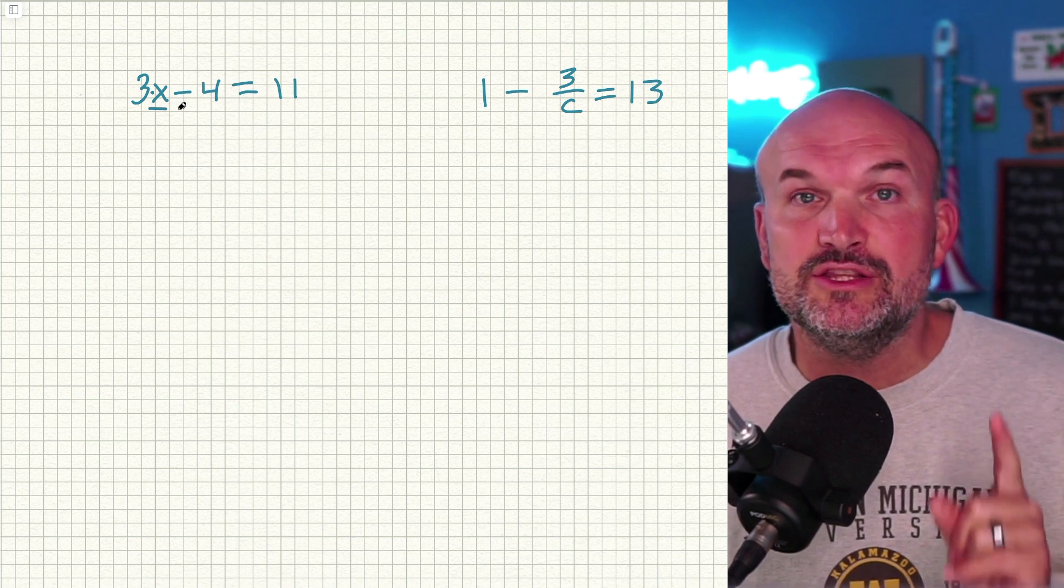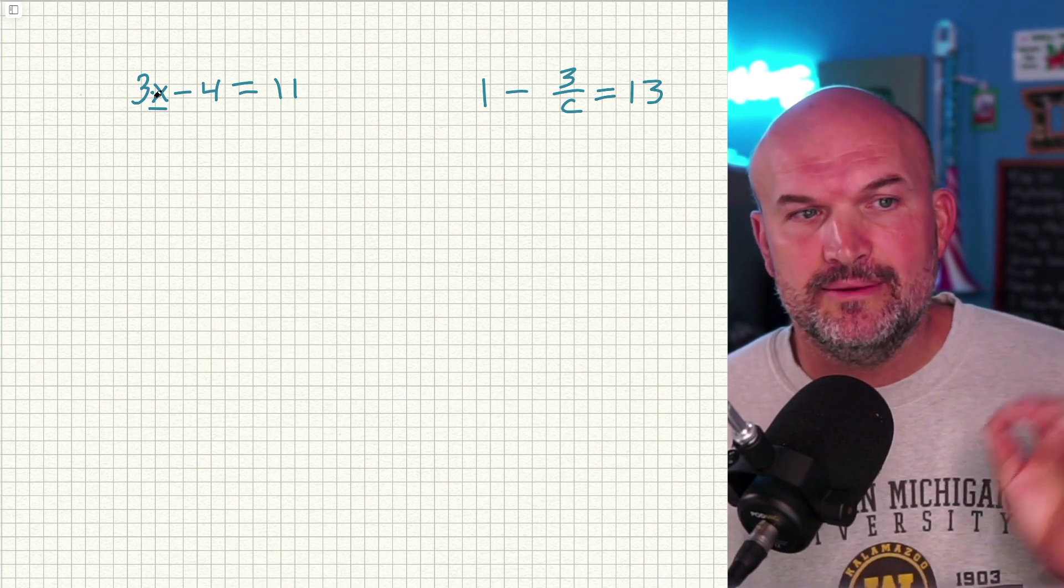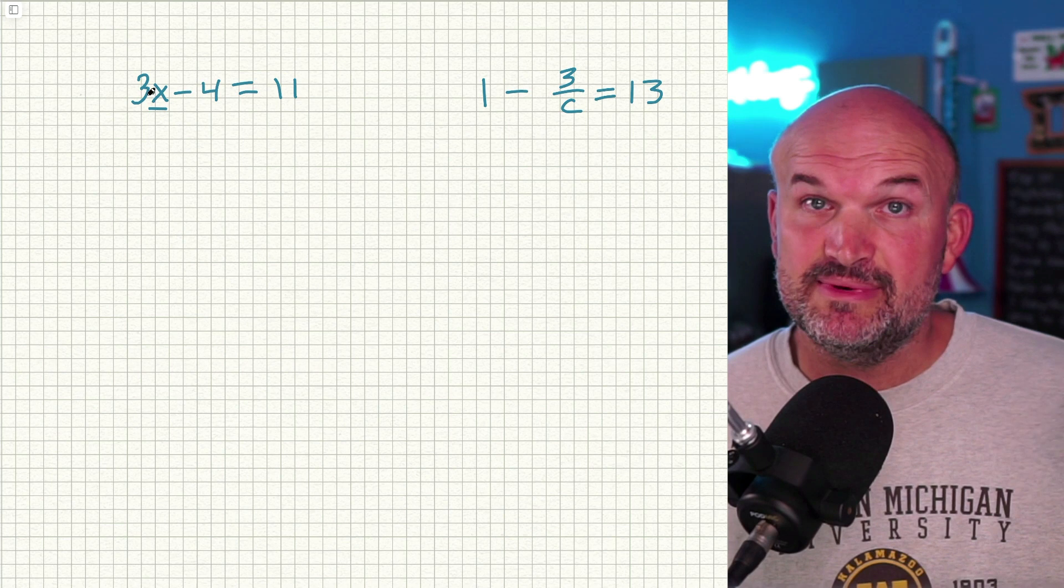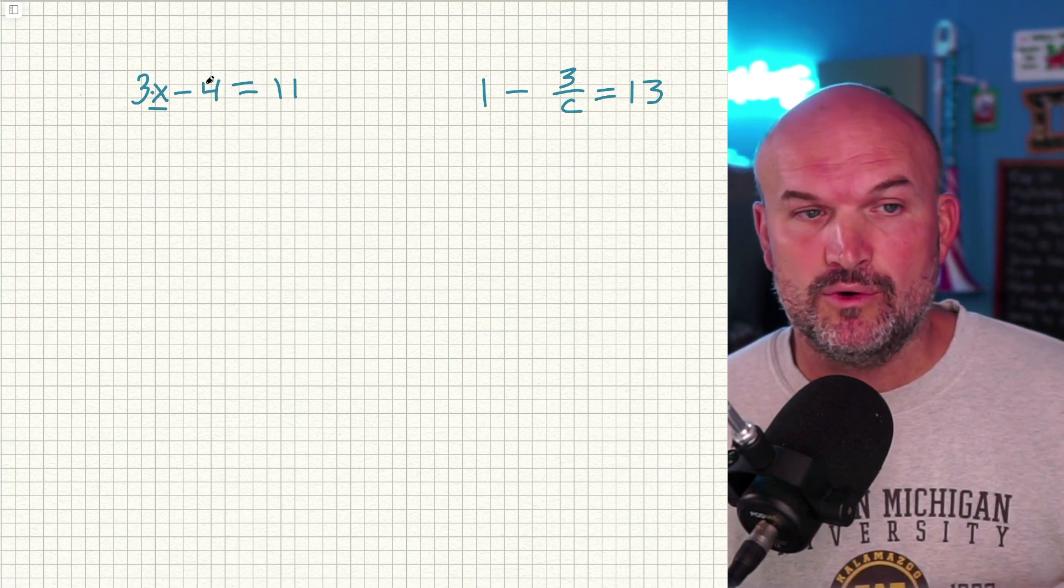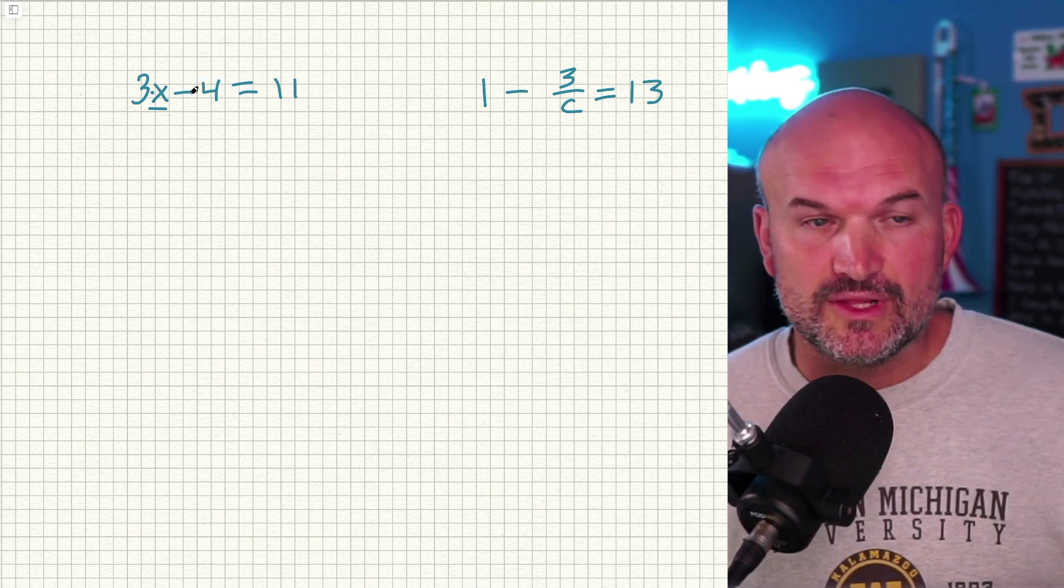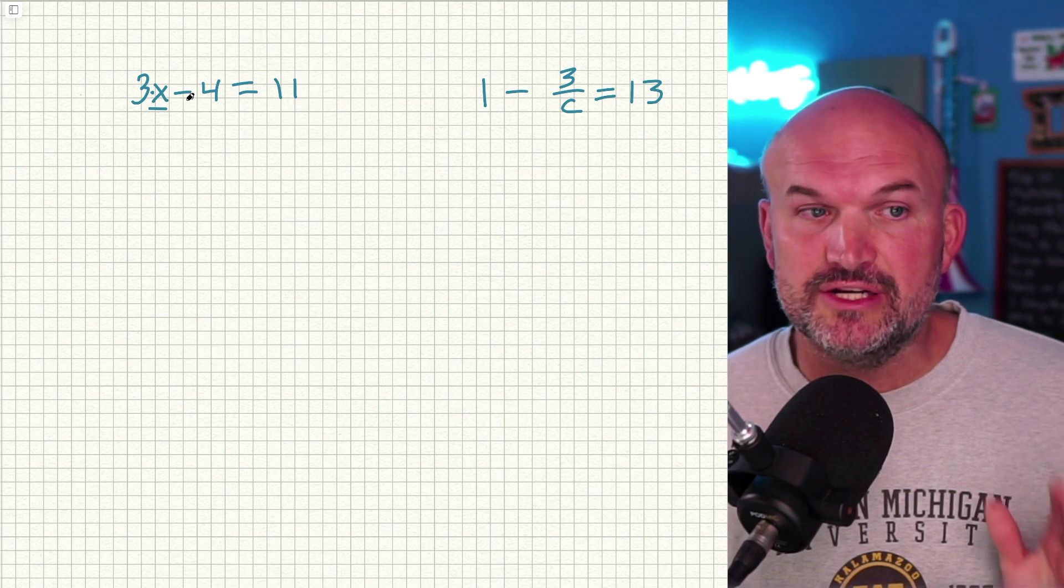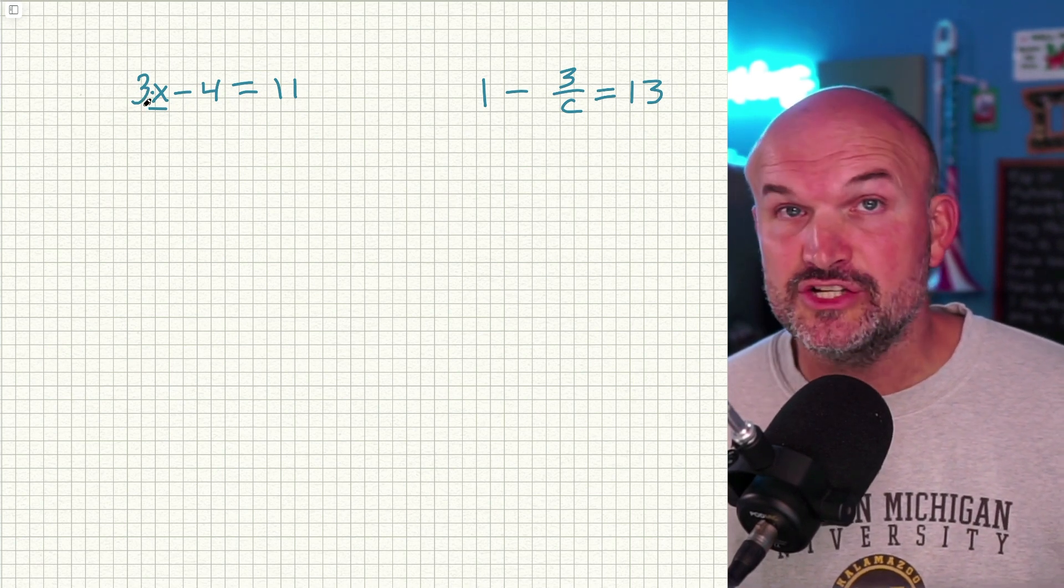We have two operations being applied to this X: it's being multiplied by three and being subtracted by four. We want to undo addition and subtraction before we undo multiplication and division.